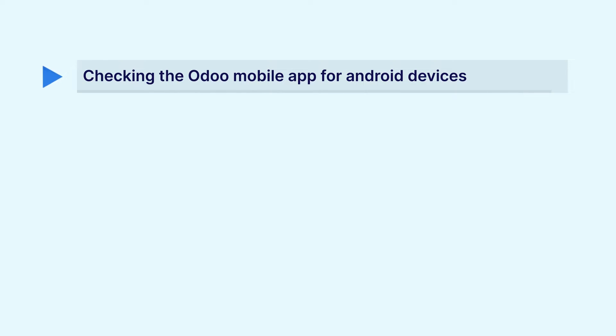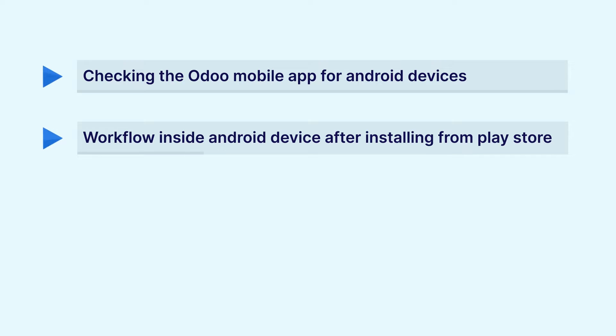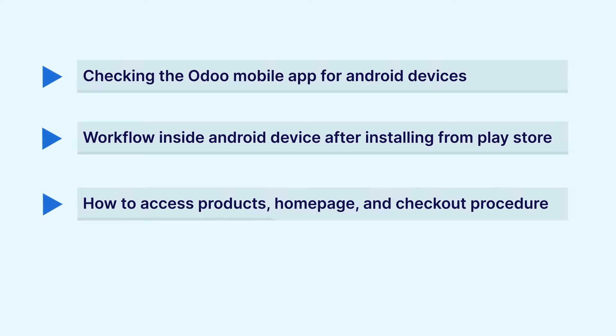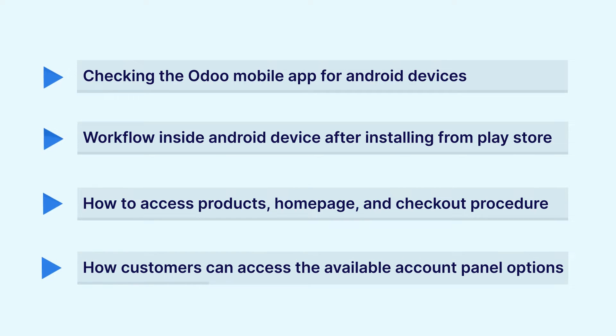In today's video, we'll be checking out the Udo mobile application for Android devices. I'll take you through the workflow on the Android device, showing how to open the app, access products, check the home page, proceed to checkout, and how customers can access the account panel options. In the next video, I'll cover the Udo backend configurations including banners, featured categories, product carousels, and other admin settings.